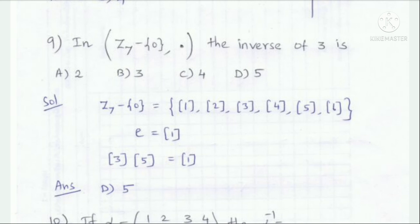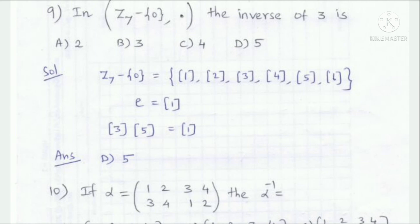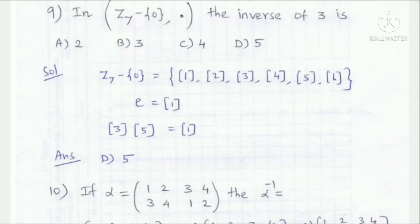In Z7, under multiplicative modulo 7, 3 elements have an inverse. Z7 has 7 elements. To find the inverse of 3 in Z7: find the element such that 3 × ? ≡ 1 (mod 7). Since 3 × 5 = 15, and 15 mod 7 = 1, the inverse of 3 is 5. Answer is option D: 5.